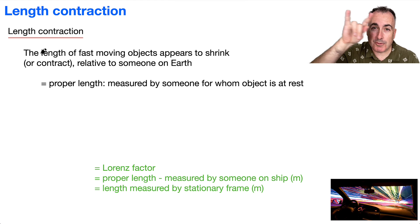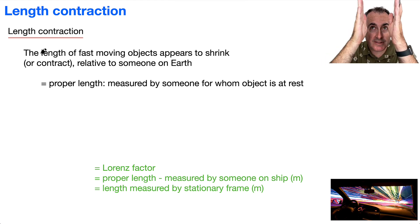However, if someone on Earth is watching you zoom by and they make some measurements of your length from far away, you really will appear to be shorter. You'll be contracted. This is another really interesting thing from relativity.